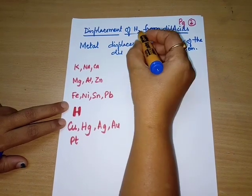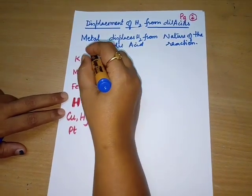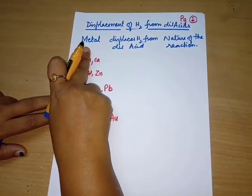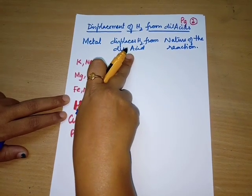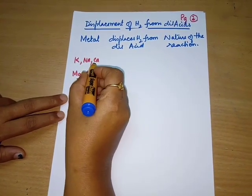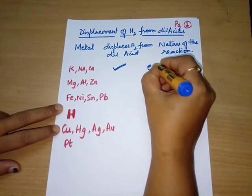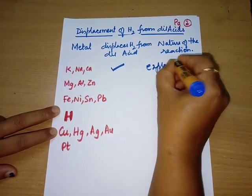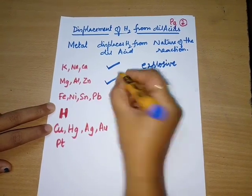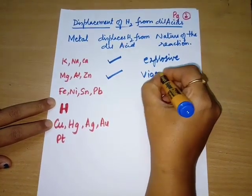Another method of preparing hydrogen is displacement of hydrogen from dilute acids. Let us tabulate this with three columns: the metals, whether they displace hydrogen from dilute acids, and the nature of the reaction. Potassium, sodium, and calcium displace hydrogen from dilute acid and the reaction is very explosive. Magnesium, aluminium, and zinc also displace hydrogen from dilute acids, but vigorously rather than explosively.